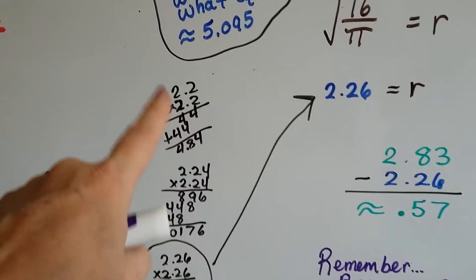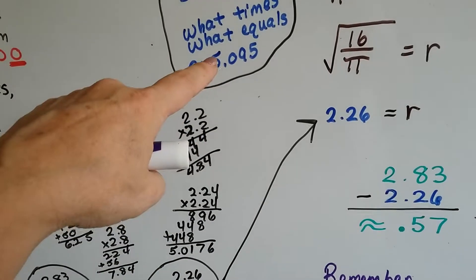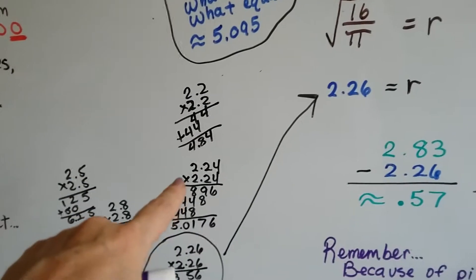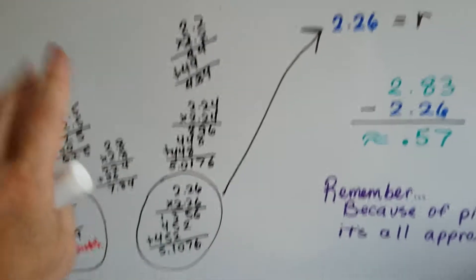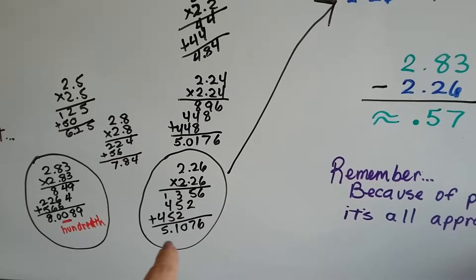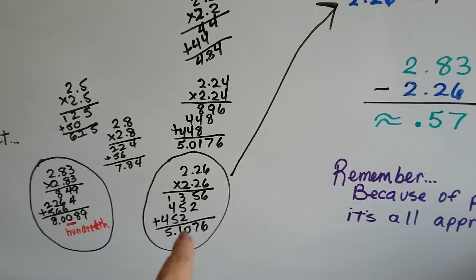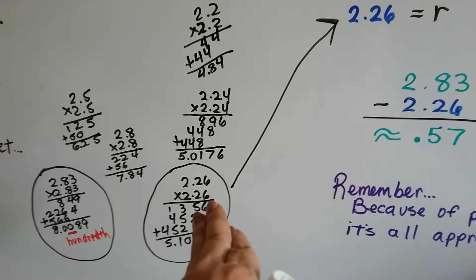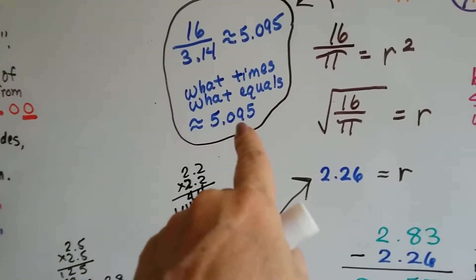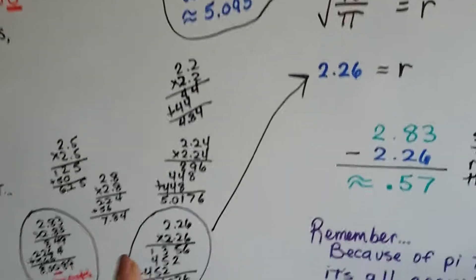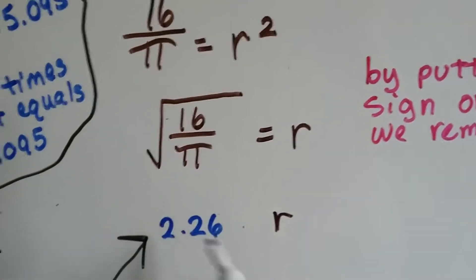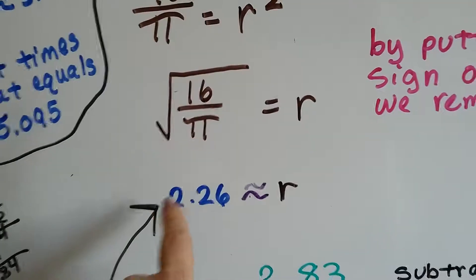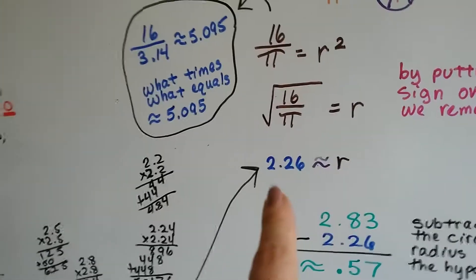So I did some math and 2.2 times 2.2 was too small. We're trying to get to 5.095 and that was only 4 something. So I tried 2.24 times 2.24 and I got 5.0176. Still not big enough. Then I got to 2.26 and that came out as 5.10. Now look, to the nearest hundredth, that's like 5.10 and I'm trying to get to 5.095. So actually, that one will work. So I'm going to use an approximate symbol because it's not exact. So it's approximately 2.26.